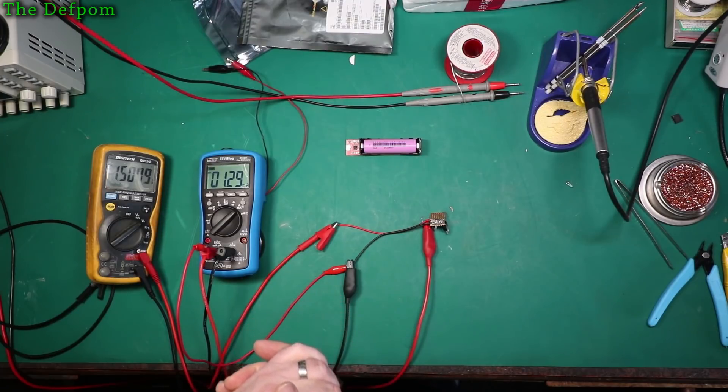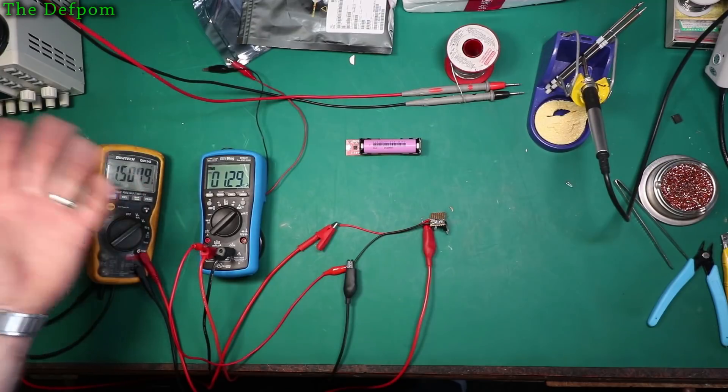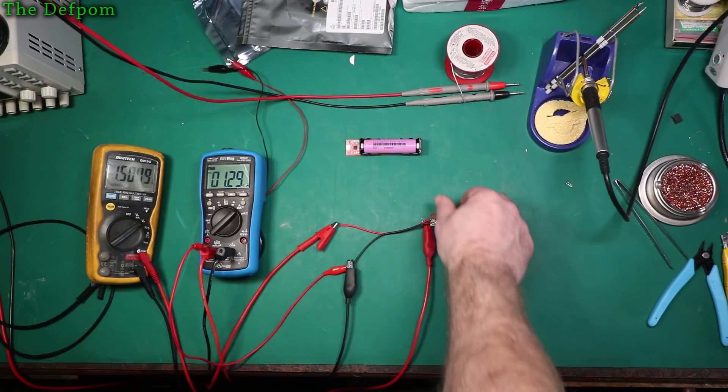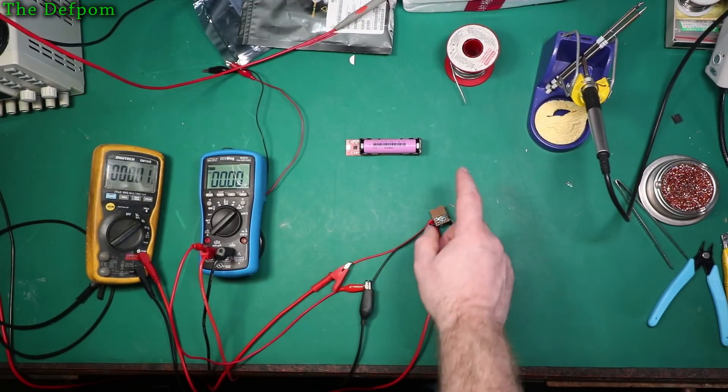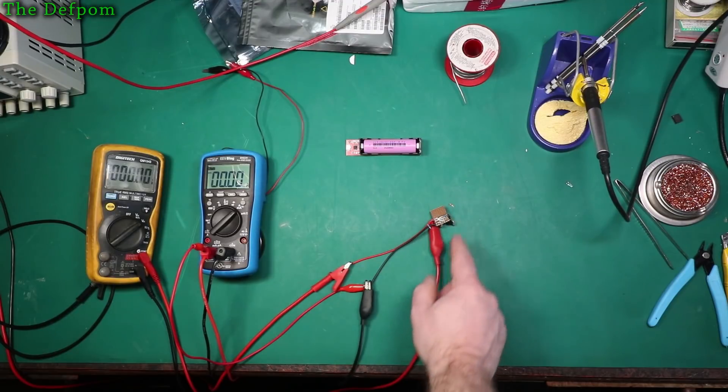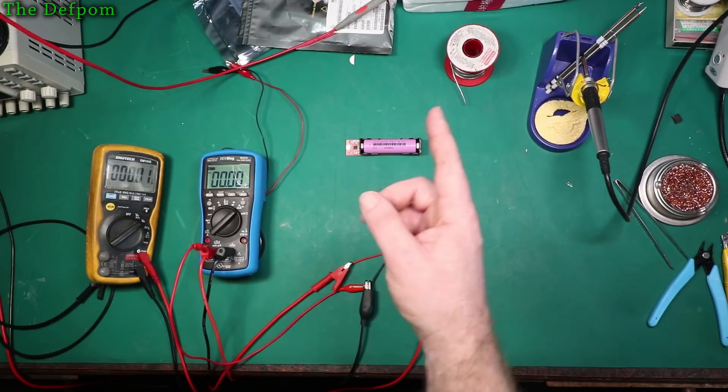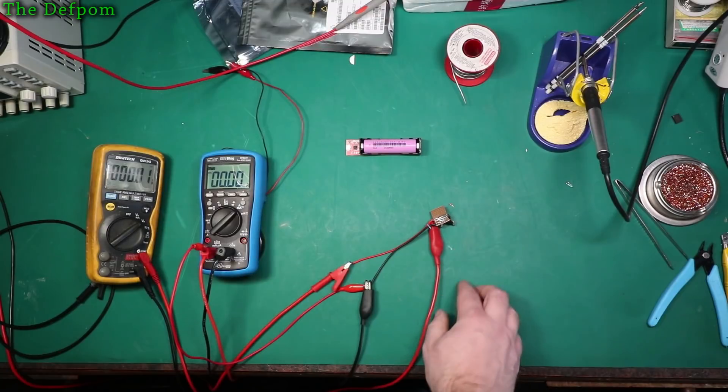I've got this set to 1.5 volts, you can see here, 1.5079, so close enough. Those resistive values we've got there, I don't remember what they were now. So 1k there, 200 ohm there. So 1k is effectively the R1, I think it is, which goes from the output to the adjustment pin. And the 200 ohm is going between ground and the adjustment.